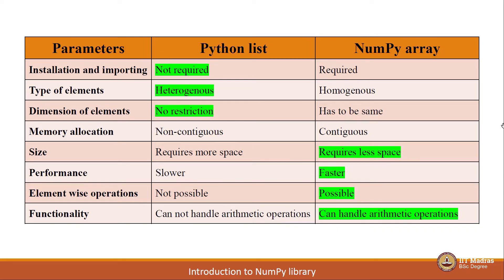Third point, dimension of elements. There is no restriction on the dimension of elements stored inside a list. For example, with a nested list, the inner list can be of any size — there is no restriction on that. Whereas with respect to NumPy arrays, every inner list should be of the same size.